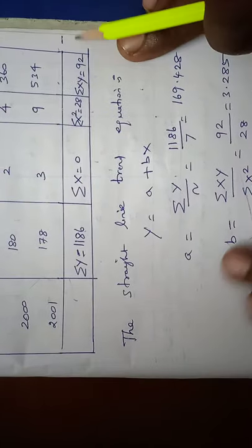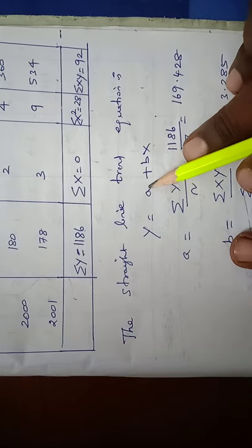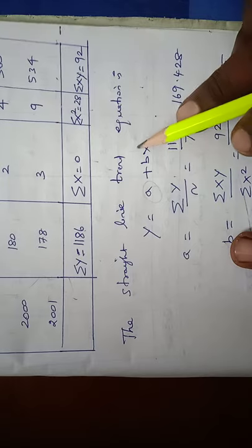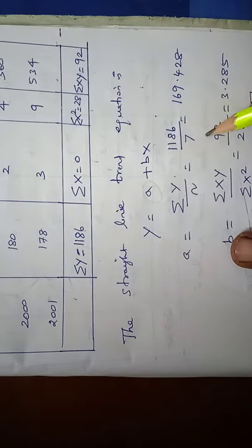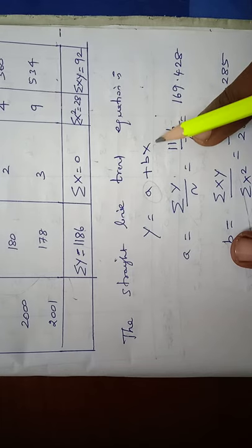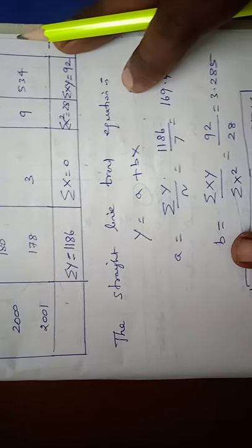We have to fit the straight line trend equation Y equal to A plus BX. The computation of A is sigma Y by N. Sigma Y is 1186, so 1186 by 7. Number of years is 7. 1186 by 7 is equal to 169.428.